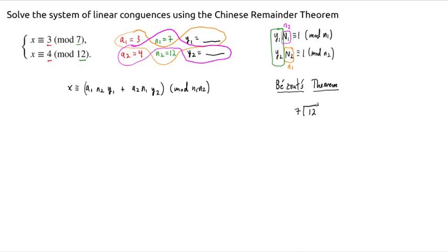Let's do 7 into 12. That goes in once, remainder of 5. We do 5 into 7, it goes in once, remainder is 2. 2 into 5 goes in twice, remainder is 1. At this point, we can start to apply Bezout's theorem to find the inverses.